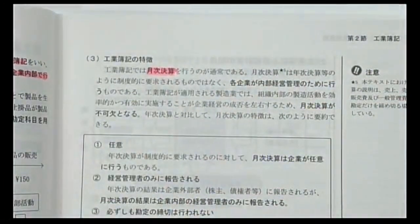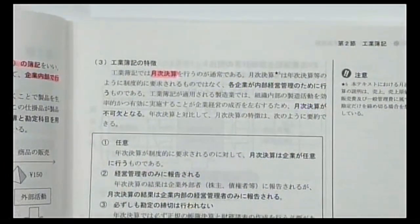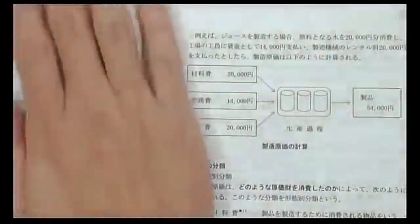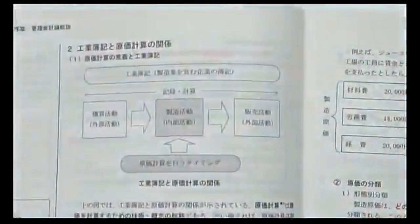管理会計は覚えることが少なく、いかに理解するかが重要です。工業簿記の特徴として、財務会計の年次決算と異なり月次決算を行います。月ごとに帳簿の締め切り作業が発生します。工業簿記と原価計算の関係を10ページで見ていきます。